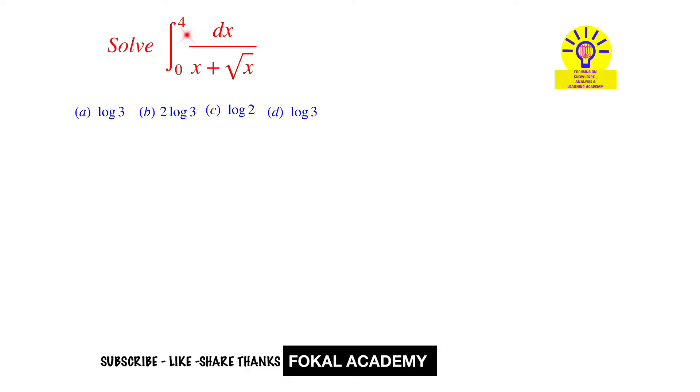So here the integrand is not in the standard format. So first of all, convert the integrand into standard format. This type of problem can be simplified by using substitution method. So let's consider that root x equal to t. So from this, x will get t square. Now differentiate on both sides this equation, then we get dx equal to 2t dt.